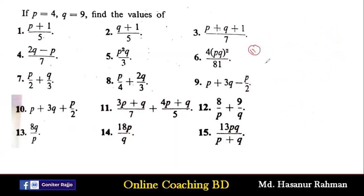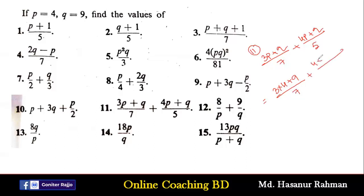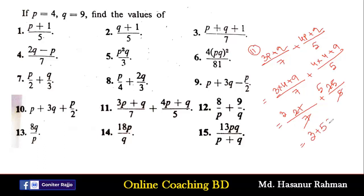Number 11 says (3p+q)/7 + (4p+q)/5. Instead of p we put 4 and q is 9. So 3×4 plus 9 divided by 7, plus 4×4 plus 9 divided by 5. 3×4 is 12, so 12 plus 9 is 21 divided by 7. And 4×4 is 16, plus 9 is 25 divided by 5. So 21÷7 is 3 and 25÷5 is 5, giving 3 plus 5 equals 8.